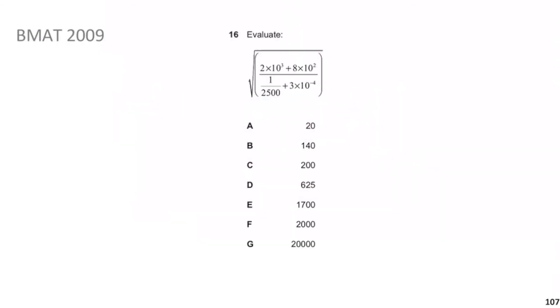Now we move on to another BMAT 2009 question — evaluate a square root of a complex fraction. Let's deal with the fraction first before square-rooting it. The tricky-looking term is 1/2500, which can be converted into a power of 10 by dividing by 4: 1/10000 = 10⁻⁴.